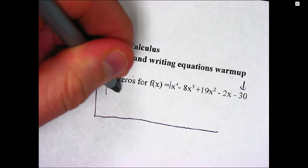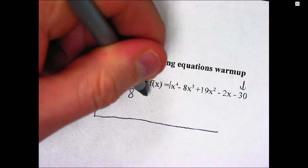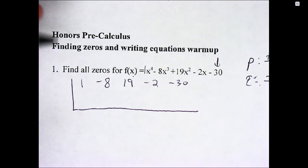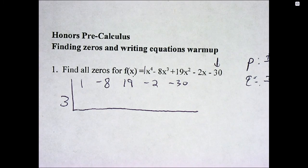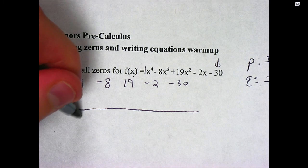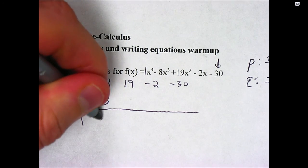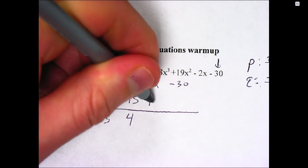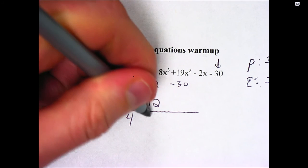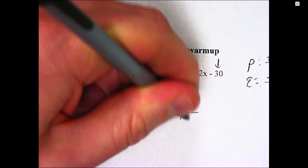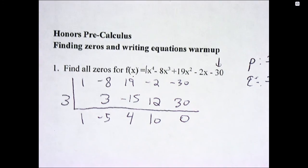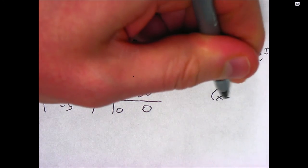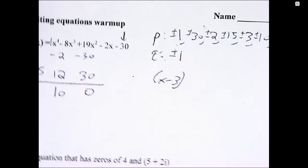And so I list the coefficients: 1, negative 8, 19, negative 2, negative 30. And I put the number that I'm actually testing out here, so I put plus 3 out here. Bring down the 1, multiply 3 times 1, add, multiply, add, multiply, add, multiply, add. And sure enough, I get a remainder of 0. So that's nice. That means x minus 3 is a factor, and 3 is a 0.